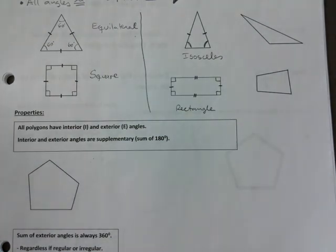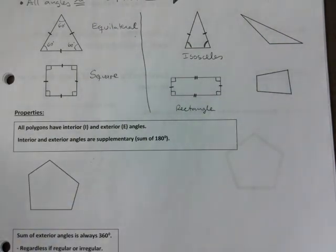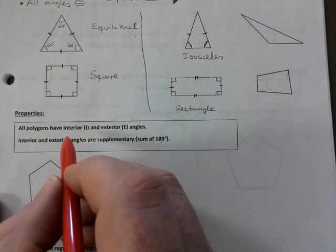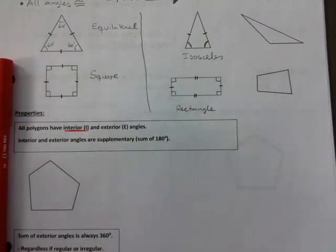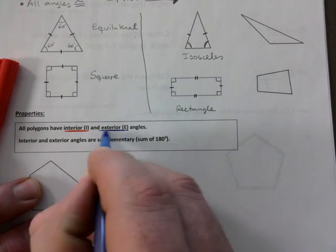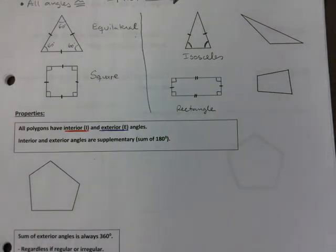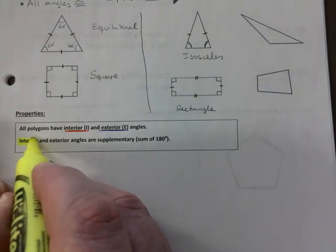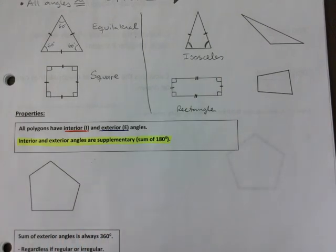This is important, this part right here. If you have a red and a blue pen, that's what I'm going to be doing here. And you'll see why in a bit. But all polygons have interior as well as exterior. I use E for that, right? Angles. And something worth highlighting is that the interior and the exterior angles are supplementary. In other words, they add up to 180.